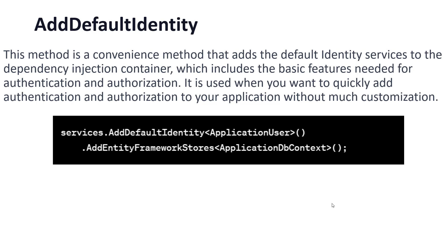The next one is AddDefaultIdentity. This method is a convenience method that adds the default identity services to the dependency injection container, which includes the basic features needed for authentication and authorization. It is used when you want to quickly add authentication and authorization to your application without much customization. In AddDefaultIdentity, you have an ApplicationUser by default and AddEntityFrameworkStores with the ApplicationDbContext. There are no defined custom rules.